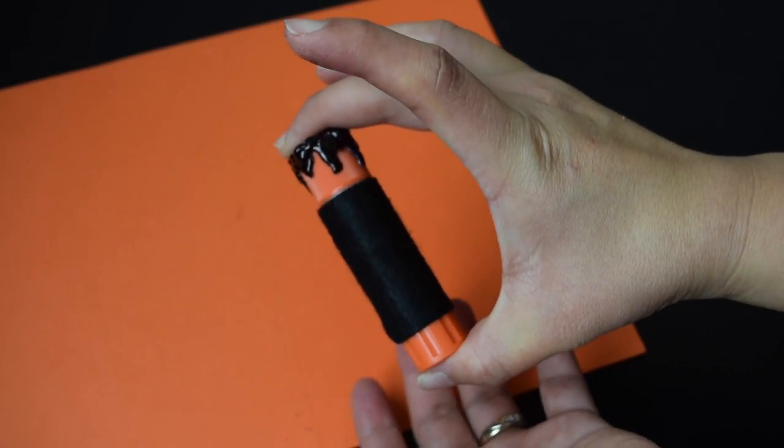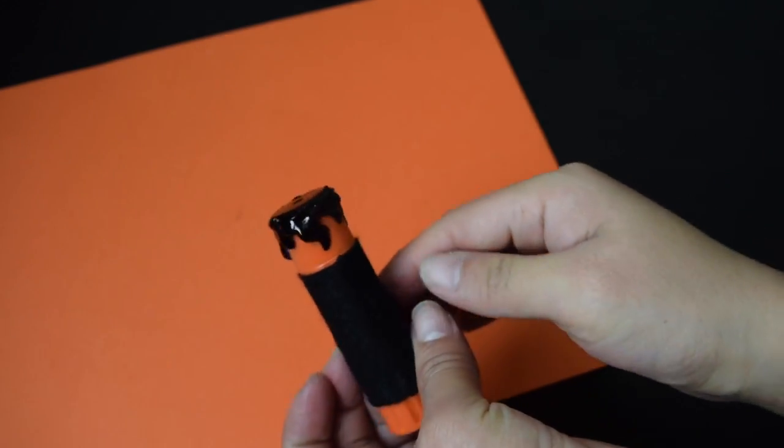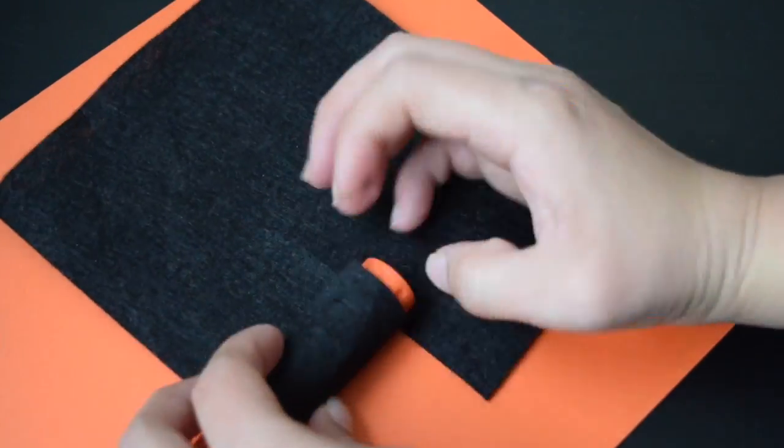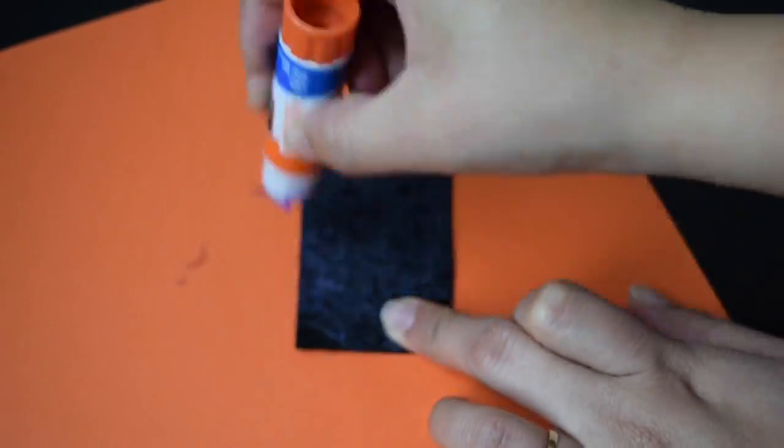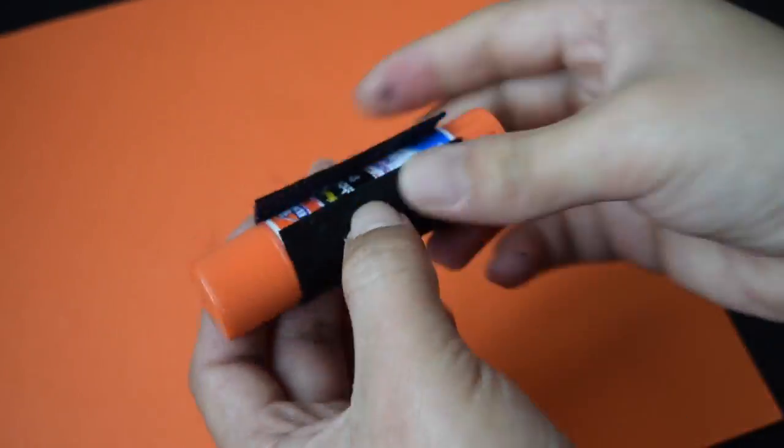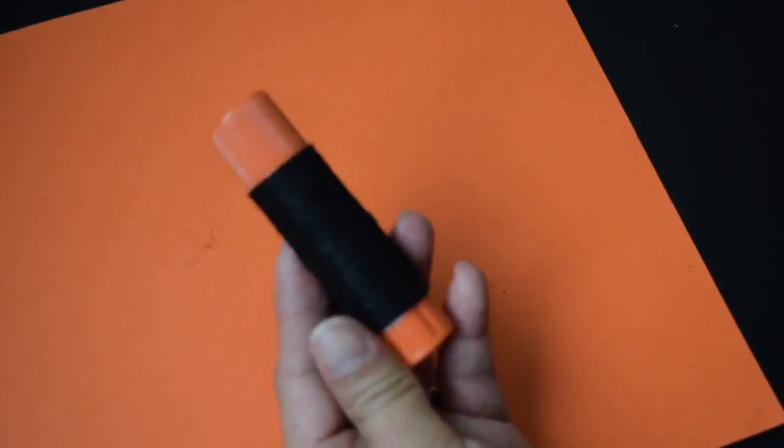Our second DIY is this candle glue stick. All we need are black felt and your glue stick. Cut the felt the size of the label, and using the glue stick itself, cover it like so. Use hot glue to secure the end overlapping.